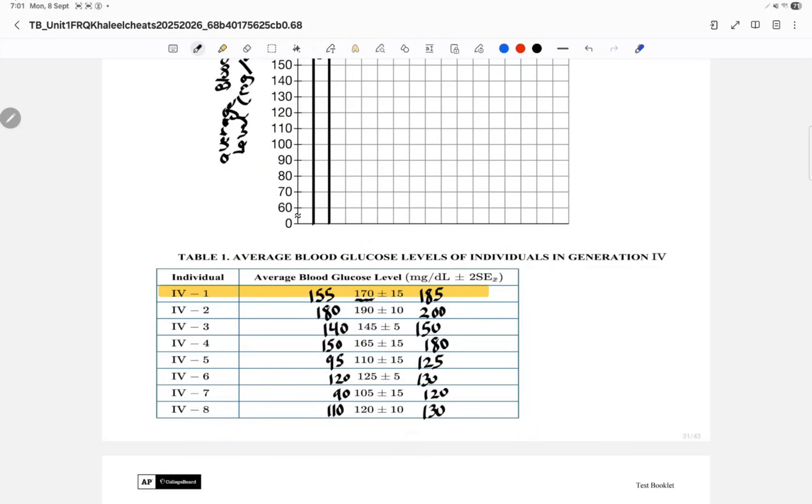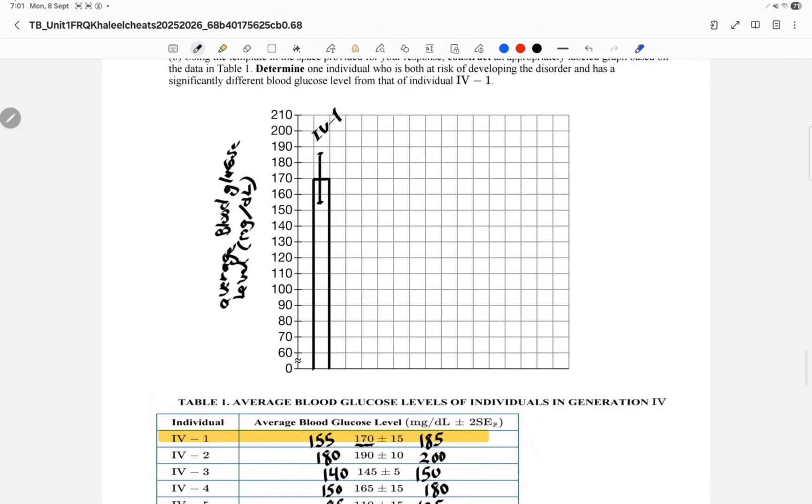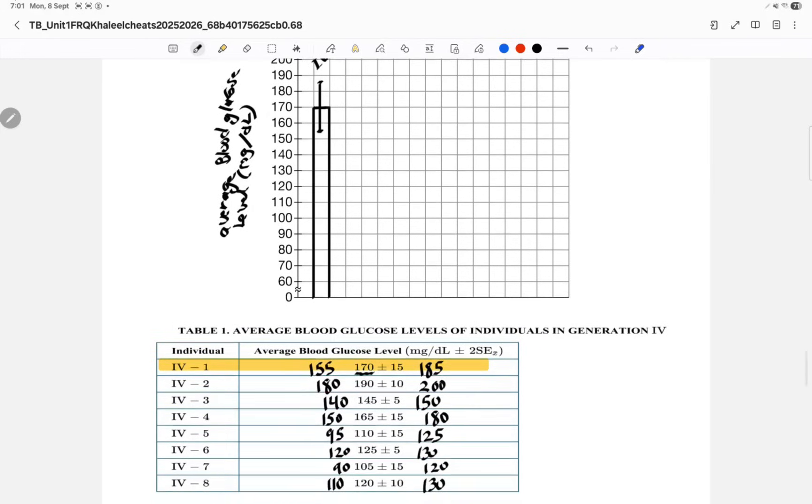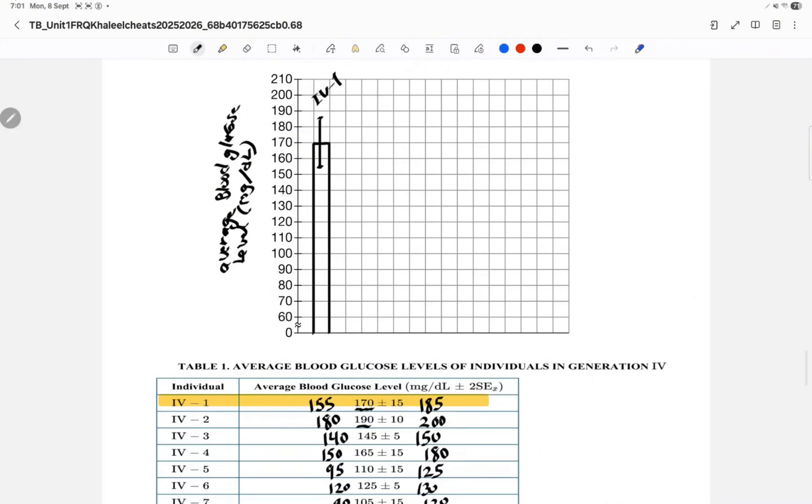Now I'm gonna do IV2 at 190, and we're gonna extend it all the way down from 180 to 200. We'll call that IV2. Now take care of the second row.